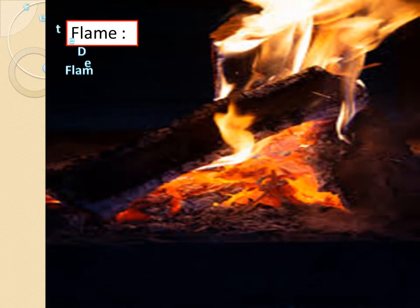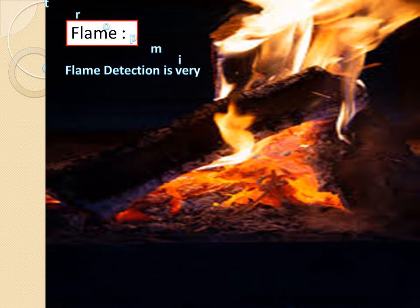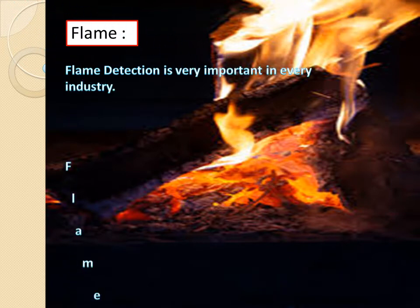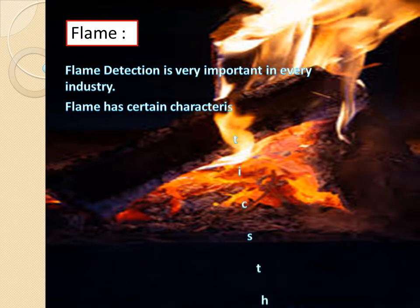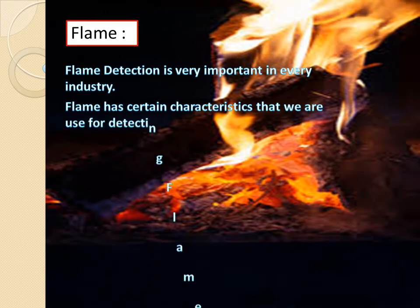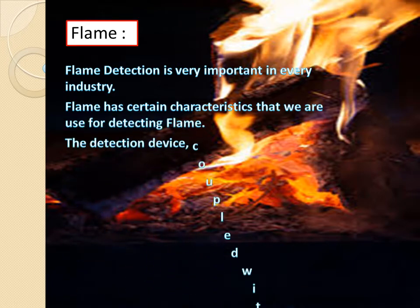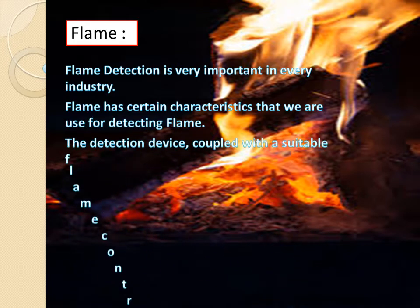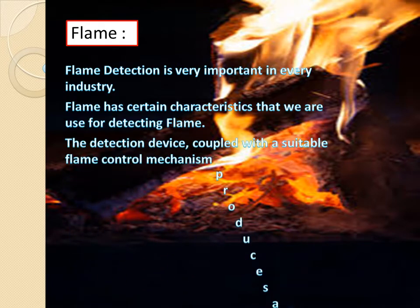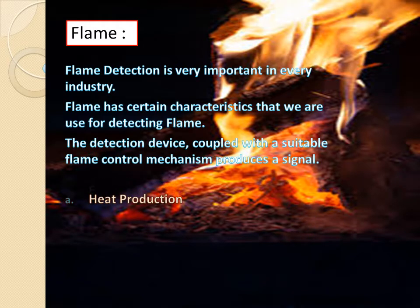Flame detection is very important in every industry. Flame has certain characteristics that are used for detecting flame. The detection device coupled with a suitable flame control mechanism produces a signal based on: heat protection, expansion of gases, production of byproducts of combustion, conditions of light infrared or ultraviolet, and ionization around the flame.